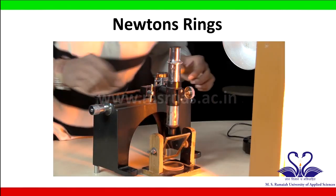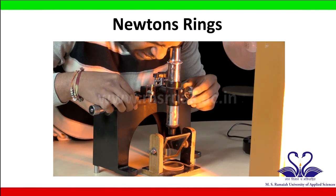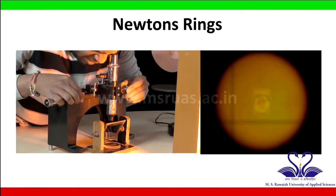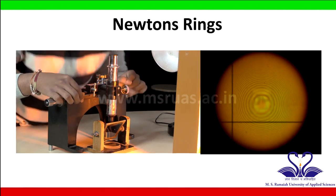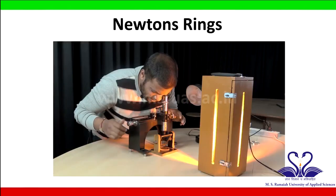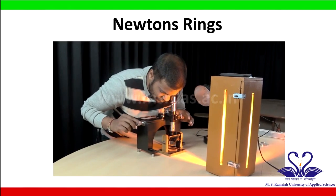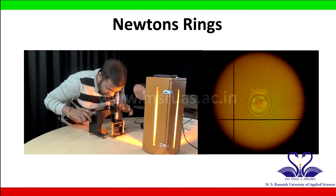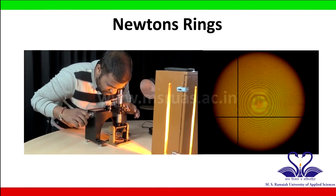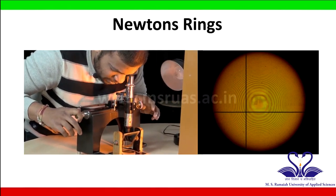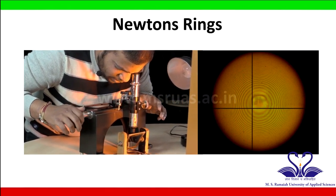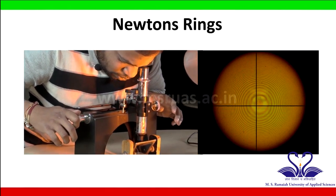See through the eyepiece and adjust the microscope until you see the Newton's rings. Now let us rotate the travelling microscope drum and bring the cross wire to the centre of the Newton's rings. The centre spot is called the 0th ring.